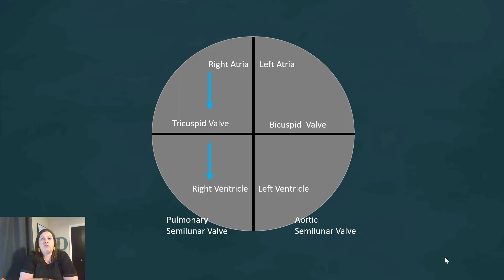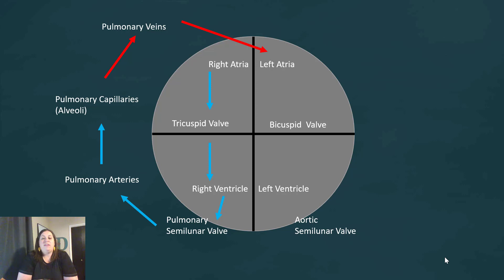Starting with blood in the right atrium: this deoxygenated blood travels through the tricuspid valve into the right ventricle, then through the pulmonary semilunar valve into the pulmonary arteries — arteries always carry blood away from the heart. The blood moves into the pulmonary capillaries, where gas exchange takes place with the alveoli in the lungs and the blood picks up oxygen. It then travels through the pulmonary veins back to the left side of the heart — veins carry blood toward the heart — and the arrows are now red because the blood carries oxygen.